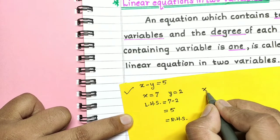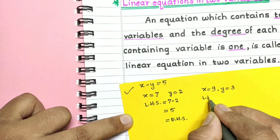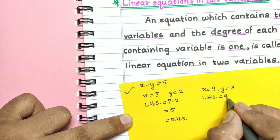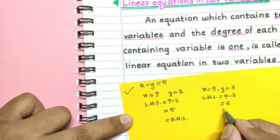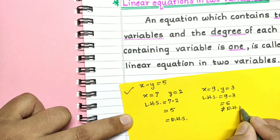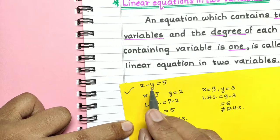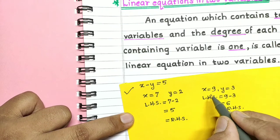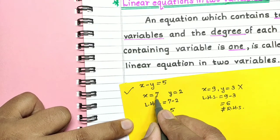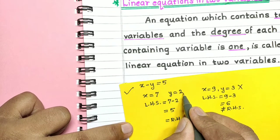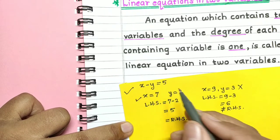If we take x equal to 9 and y equal to 3, then LHS is 9 minus 3 which is 6, and this is not equal to the RHS of 5. So these two values do not satisfy the equation and are not a solution. But x equal to 7 and y equal to 2 do satisfy the equation, so that is a solution.